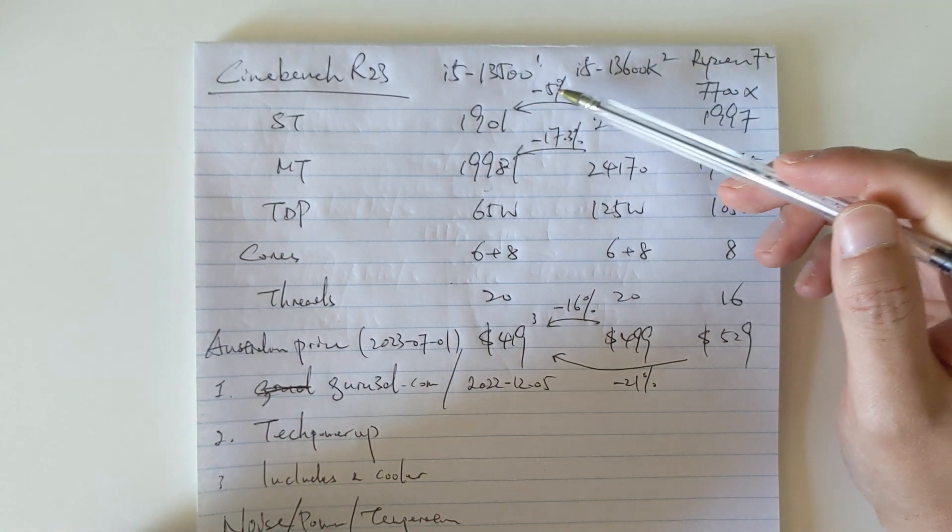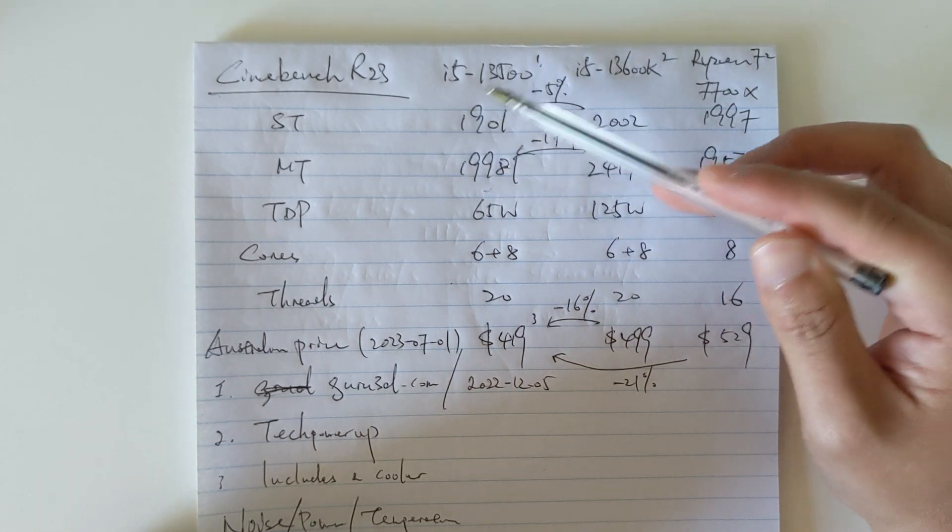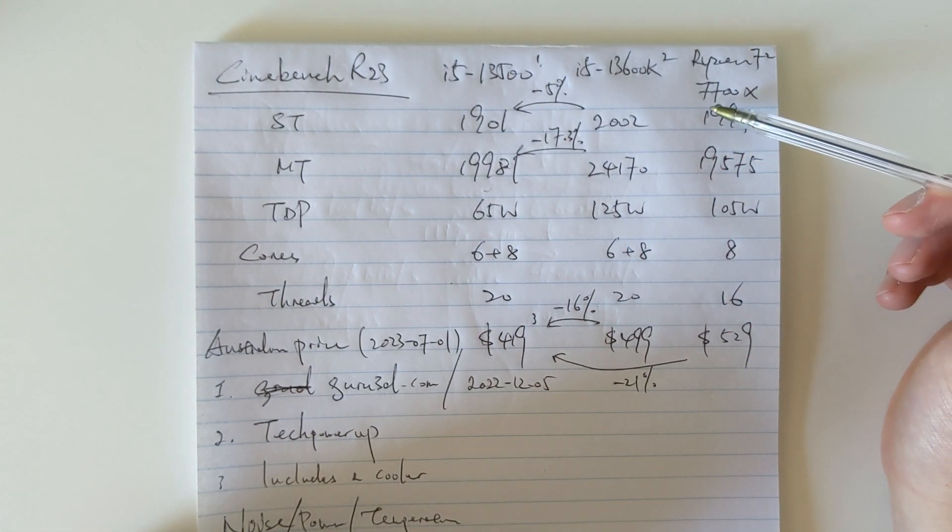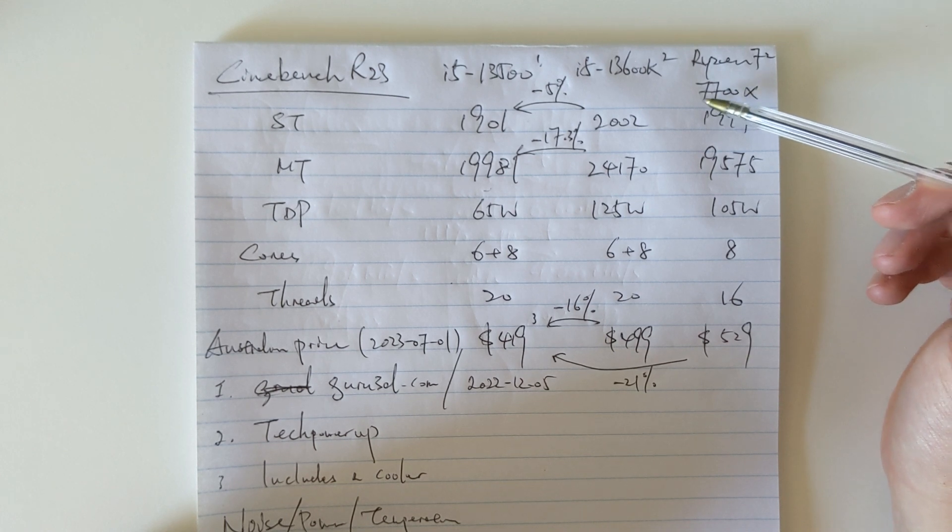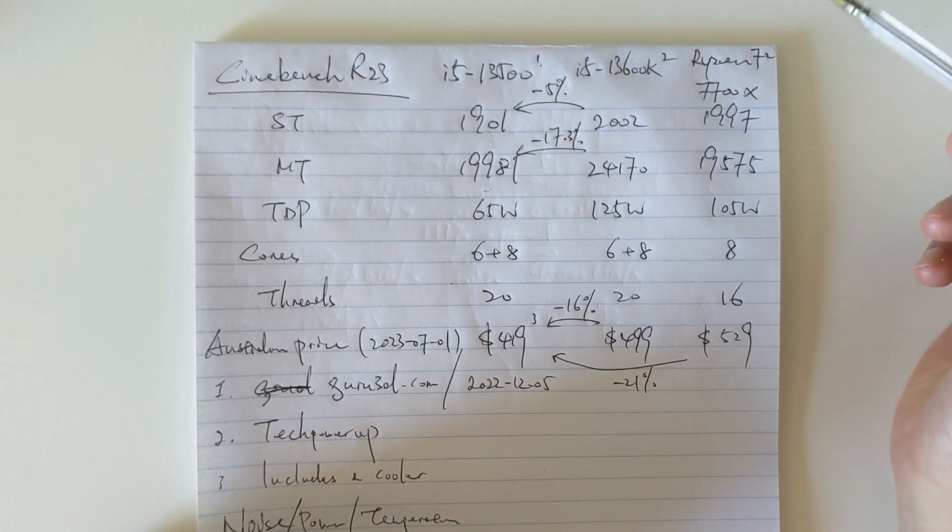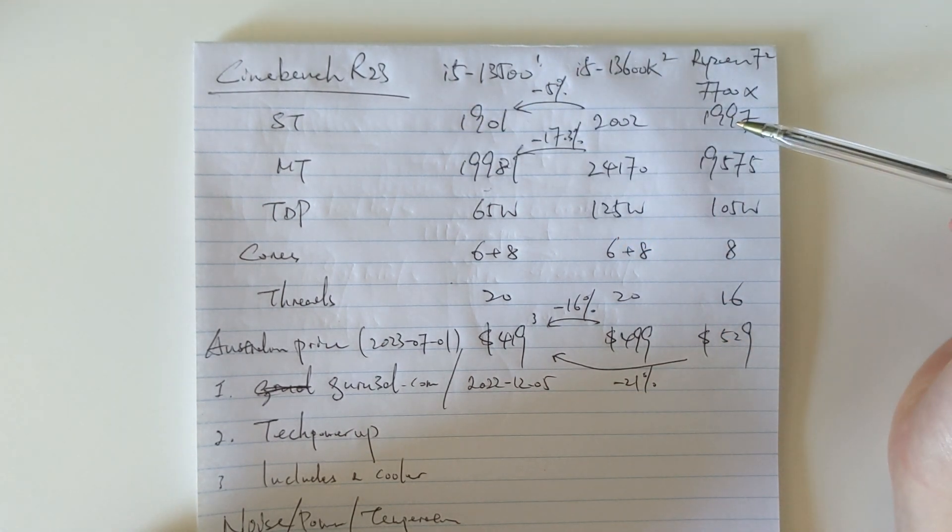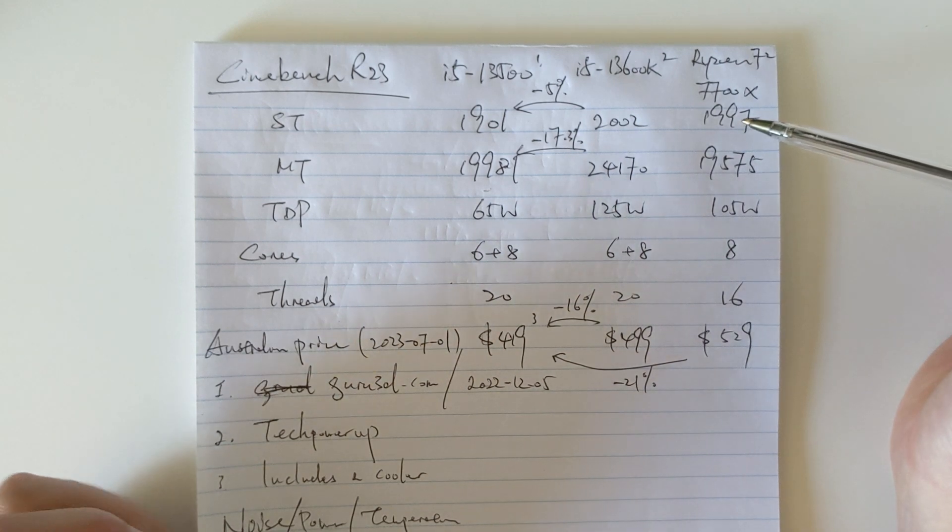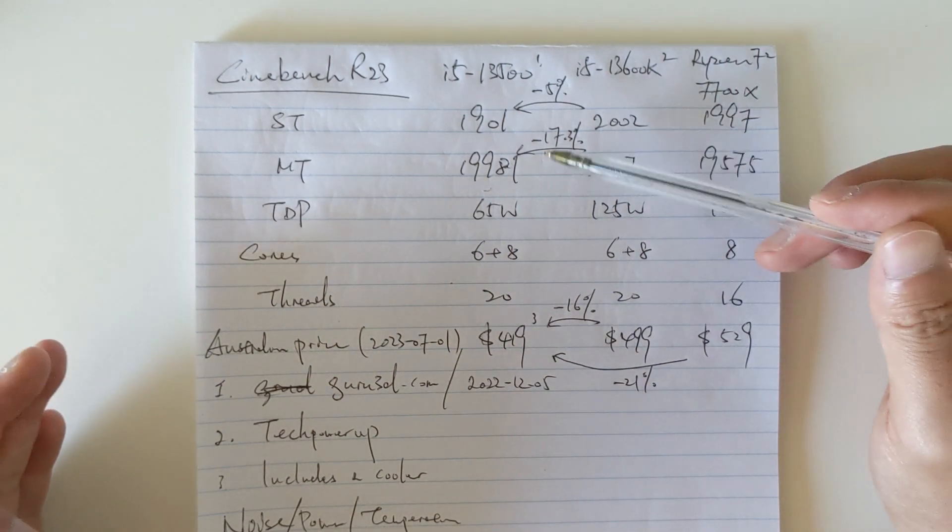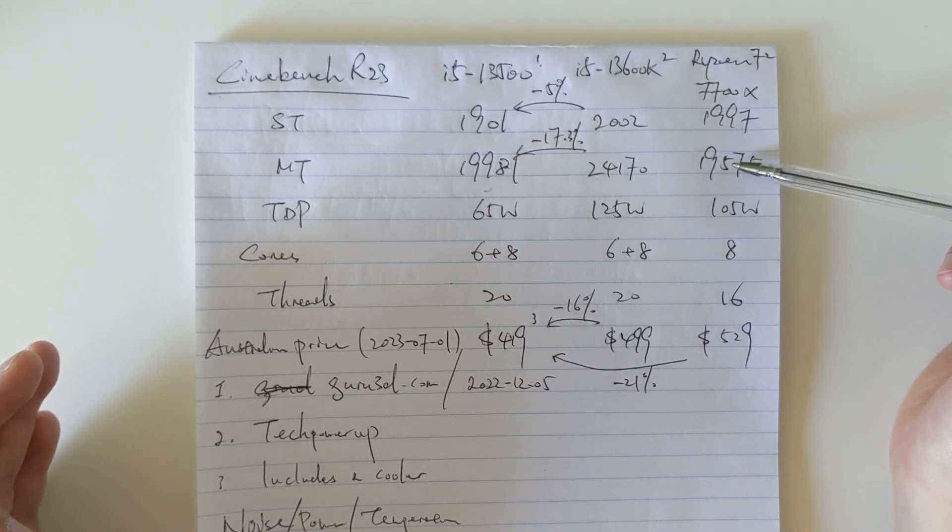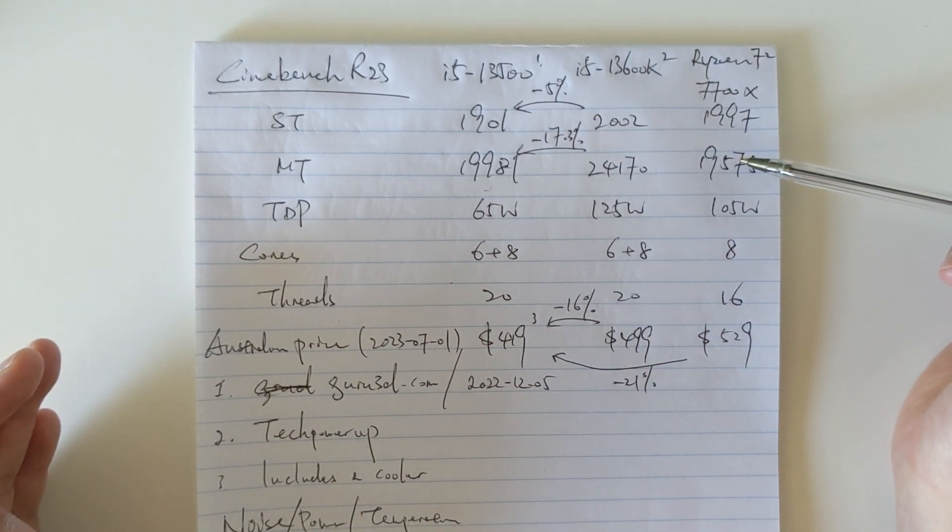But if we compare those scores with Ryzen 7 7700X, actually the performances are quite similar. The single threaded performance might be less than 5 percent lower, but the multi-thread performance is higher. It could be more than 2 percent.